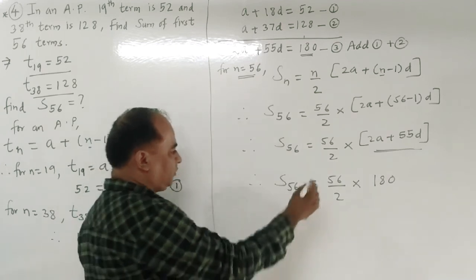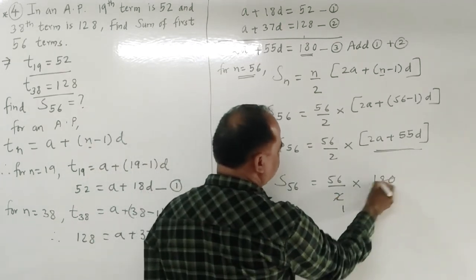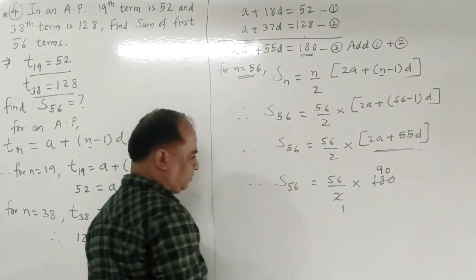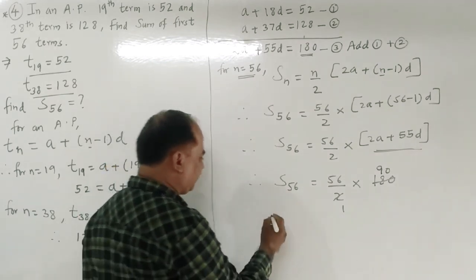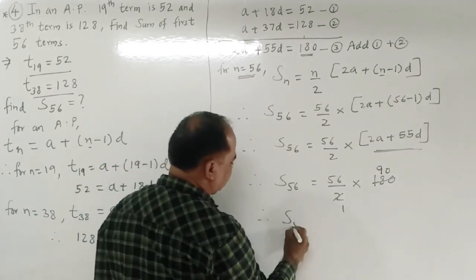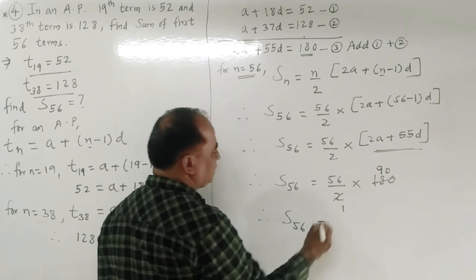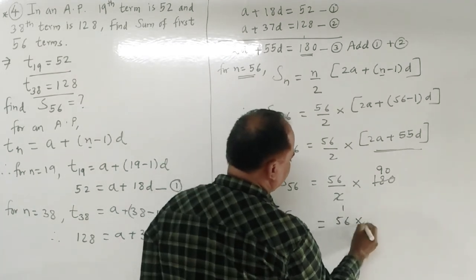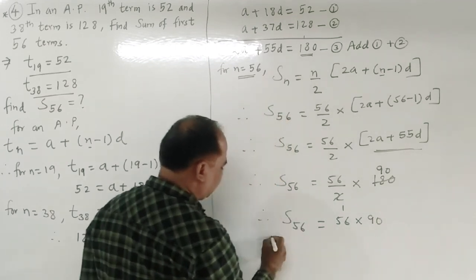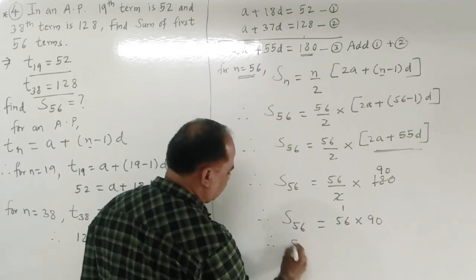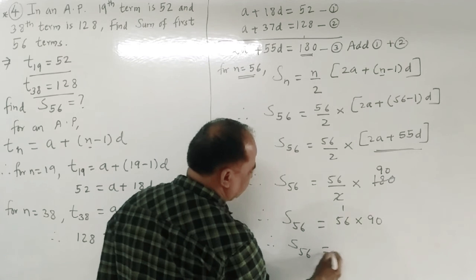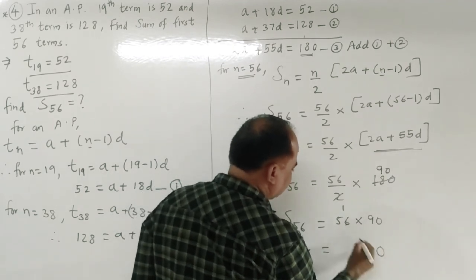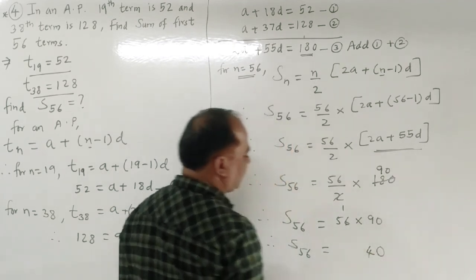From equation 3, we know 2a + 55d = 180. So S56 = 56/2 × 180 = 28 × 180. Therefore the sum of 56 terms S56 = 5040.